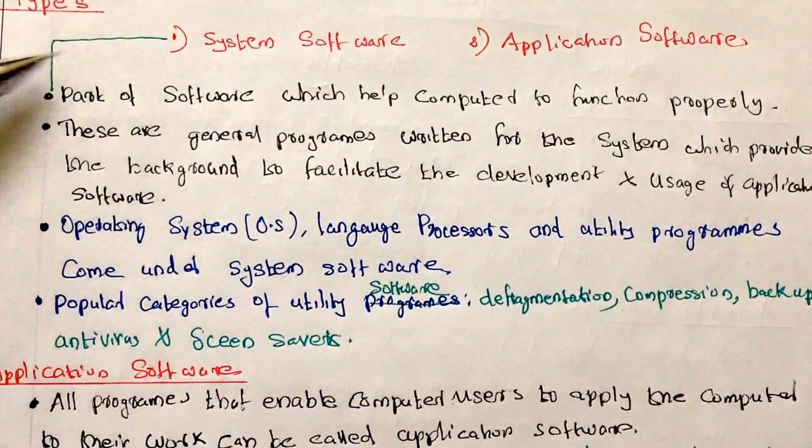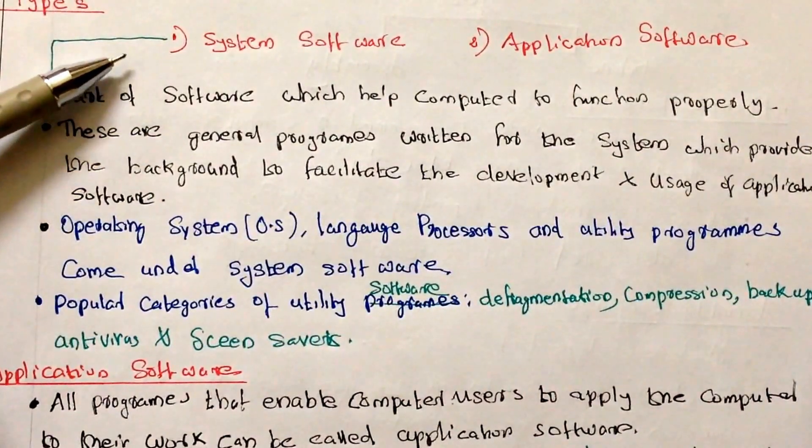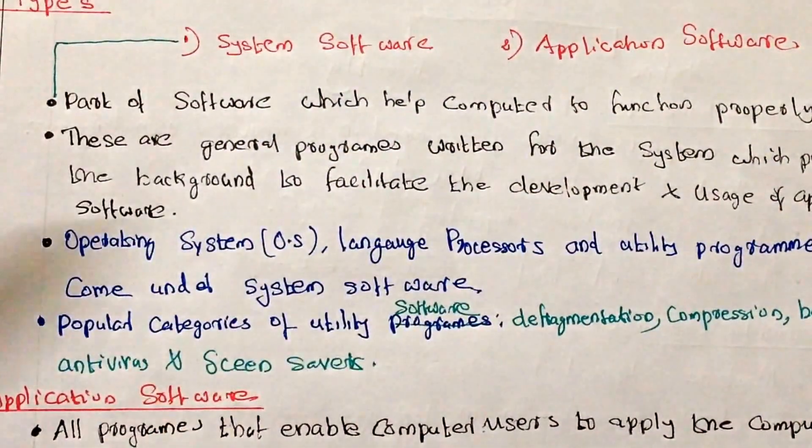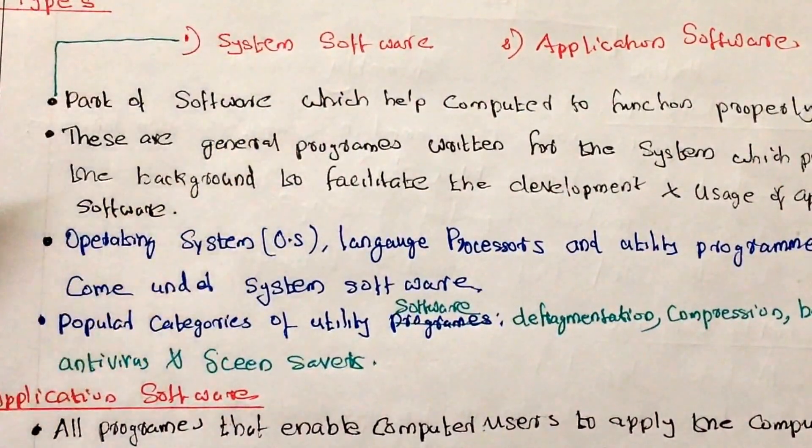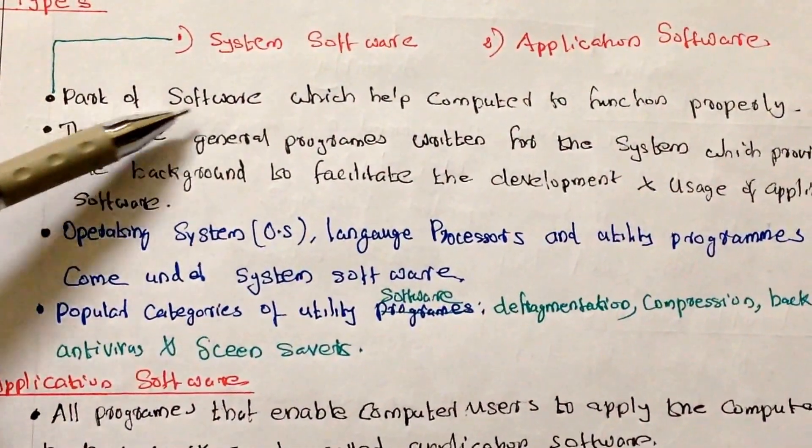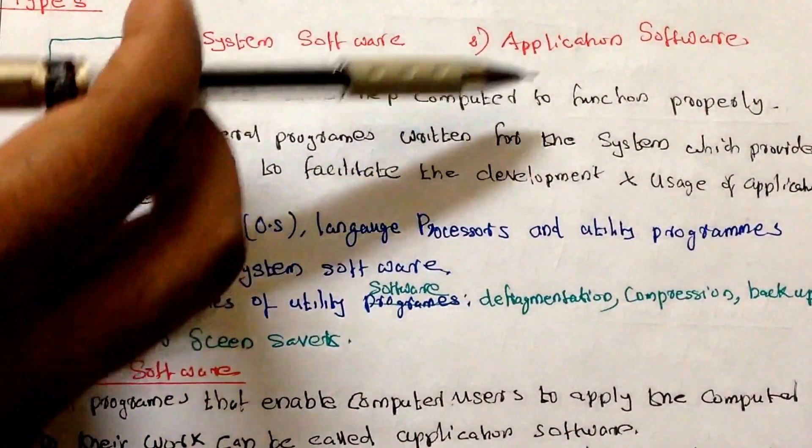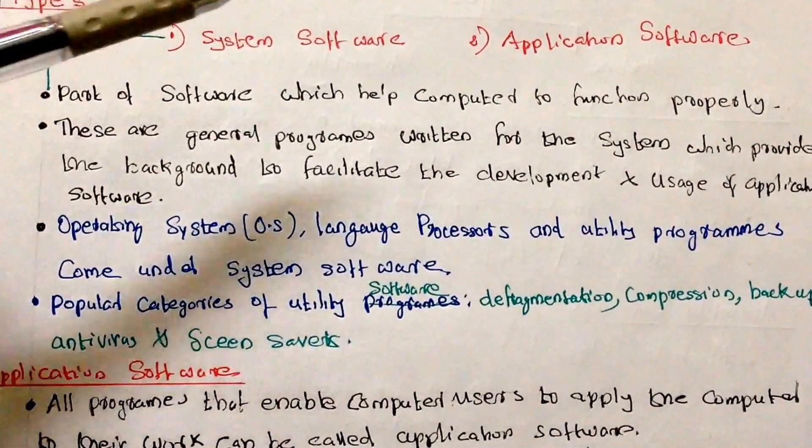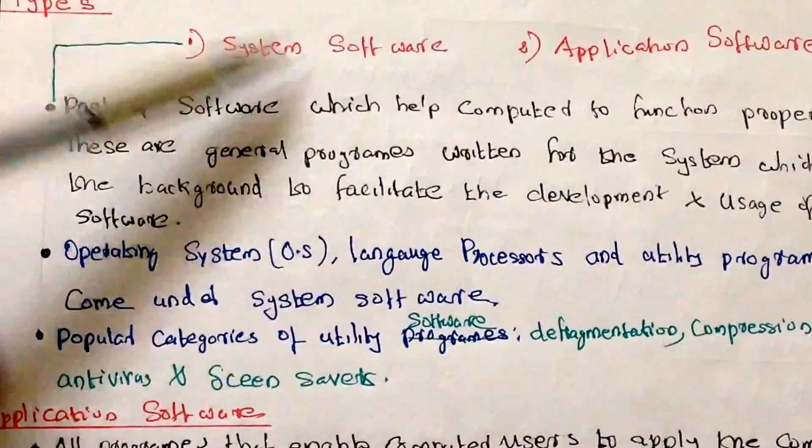So there are mainly two types of software. One is system software and application software. So what exactly is system software? System software is a part of software which helps the computer to function properly. Computer has to have some basic functions that will help how to work, that helps by system software.